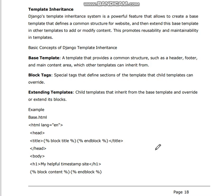This is a ten marks question on Django template inheritance. Django template inheritance is a powerful feature that allows us to create a base template that defines a common structure for a website, and then extend this base template in other templates to add or modify content. It creates a base template and extends it in child templates, which promotes code reuse, reduces duplication, and makes maintenance easier — promoting reusability and maintainability in templates.